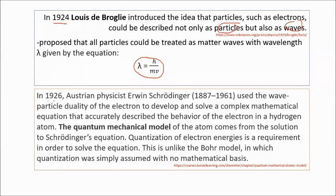In 1926, Austrian physicist Erwin Schrödinger used the wave-particle duality of an electron to develop and solve a complex mathematical equation that accurately described the behavior of the electron in a hydrogen atom. The quantum mechanical model of the atom comes from the solution of Schrödinger's equation. Quantization of electron energies is a requirement to solve the equation, unlike the Bohr model where quantization was simply assumed with no mathematical basis.